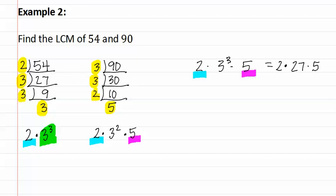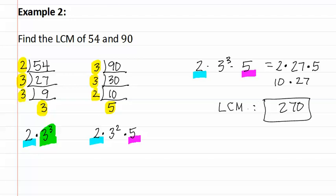We now can multiply these together, remembering that we can multiply in any order if everything is multiplication. Two times five is ten, and we still have it times twenty-seven. Twenty-seven times ten is two hundred seventy. This means that our least common multiple is two hundred seventy.